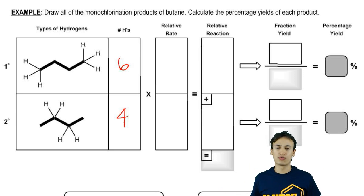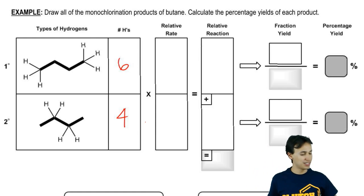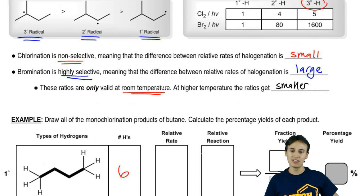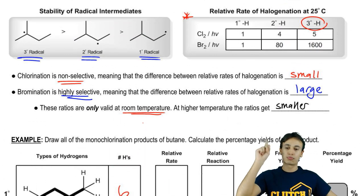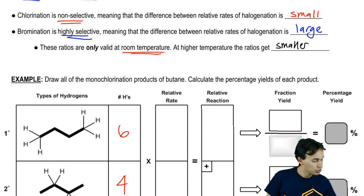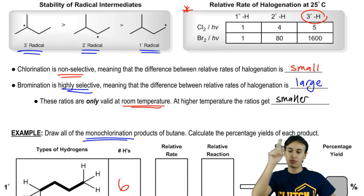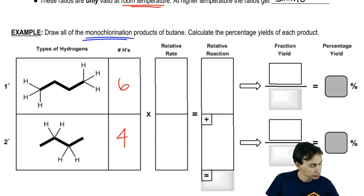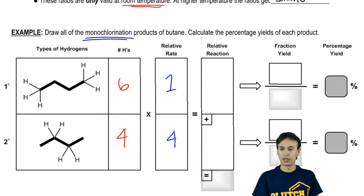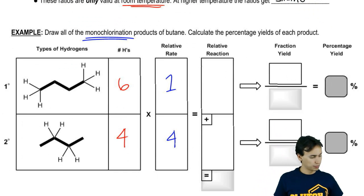Now we're going to plug in the relative rate. Where do I get that number? From my table. Relative rate of primary chlorination, see it says monochlorination. That's where this becomes important. So I'm going to look at the numbers and it's one and four. So I'm going to put that in here. One and four. That's right. Perfect.